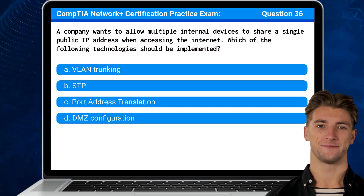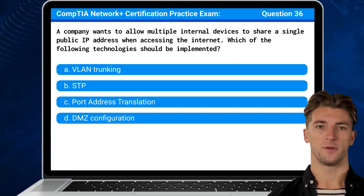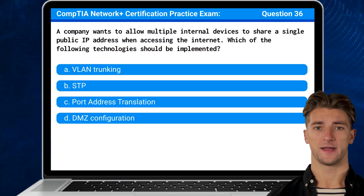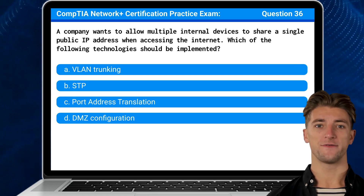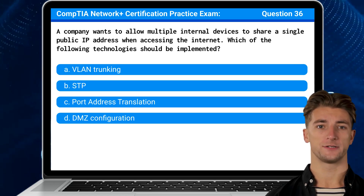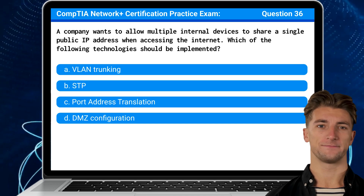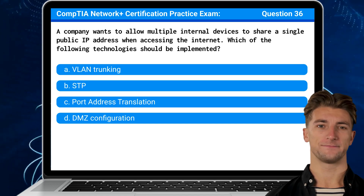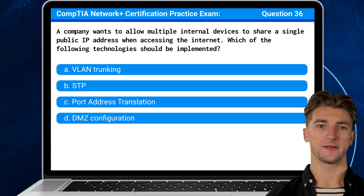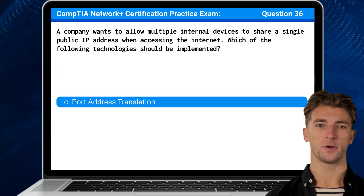Question 36: A company wants to allow multiple internal devices to share a single public IP address when accessing the Internet. Which of the following technologies should be implemented? The answer is C: Port Address Translation.